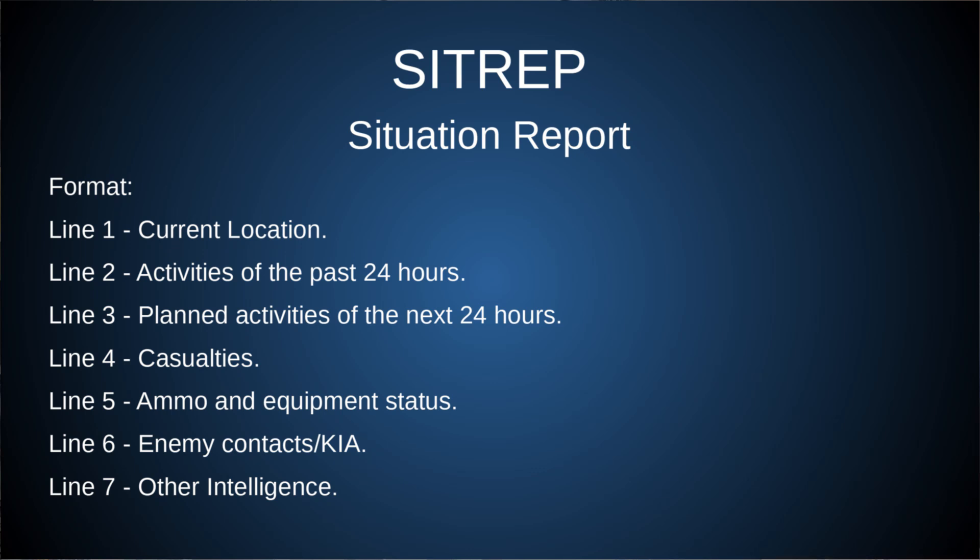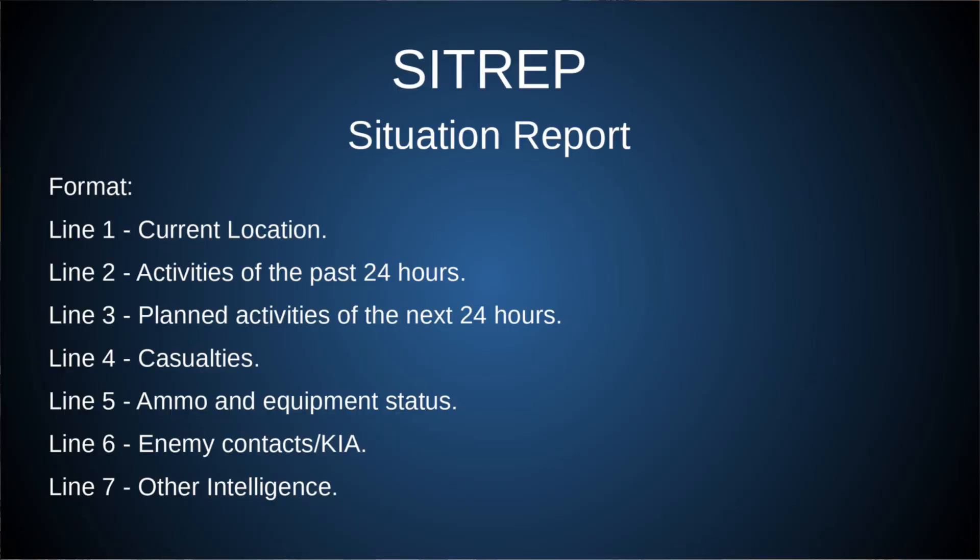Line 1 is your current location — that could be an 8 or 10-digit grid square like the military uses, a lat/long, or even an address or relative position to a known landmark. Line 2 is activities of the past 24 hours, and of course only what is relevant to the mission — not about the MREs or living arrangements, just obstacles encountered and curveballs you had to deal with to accomplish the operation.